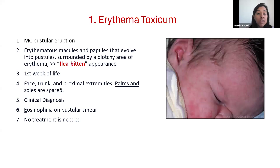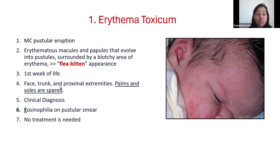The first one is called erythema toxicum. It's the most common pustular skin lesion. It's characterized by erythematous macules and papules which can evolve into pustules, and classically there is erythema at the base of these skin lesions — that's why it's called a flea-bitten appearance. Usually these lesions appear within the first week of life, however they can be seen up to the first four to six weeks of life.